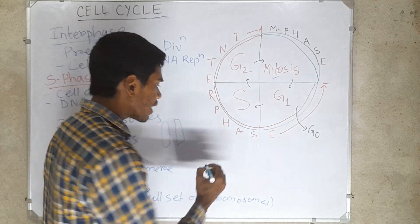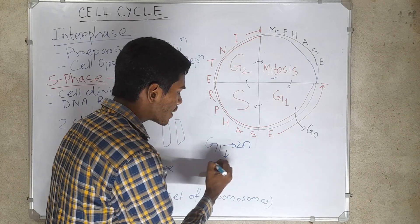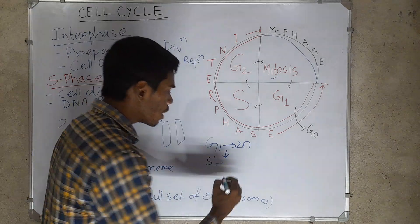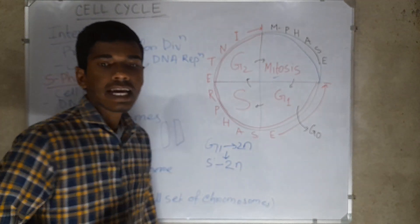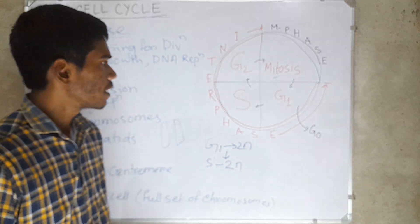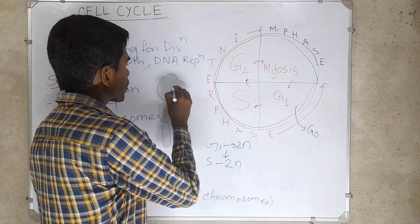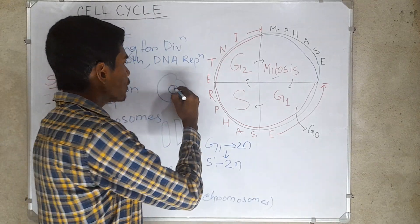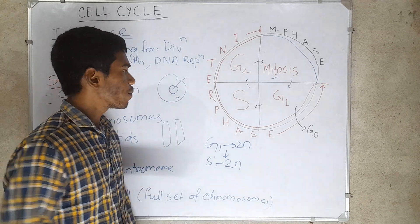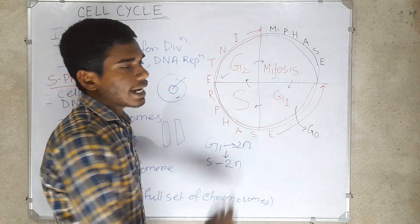In G1 phase, the number of chromosomes is 12. Even after the end of S phase, the number of chromosomes is also 12 — that means there is no change in the number of chromosomes. DNA replication occurs in the nucleus of the cell, but the centriole duplicates in the cytoplasm. Thereafter, G2 phase begins.